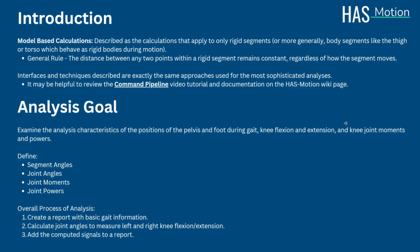This can be described as the calculations that only make sense relative to rigid segments, or more generally, body segments like the thigh or torso which behave as rigid bodies during motion. A general rule for this is that the distance between any two points within the segment remains constant, regardless of how the segment moves.